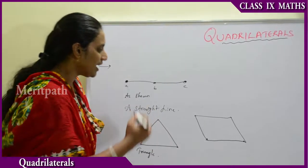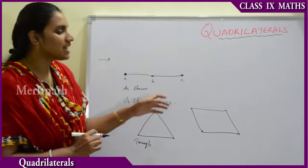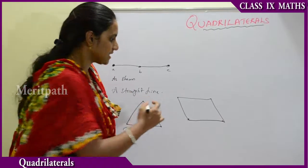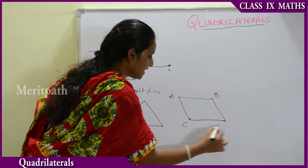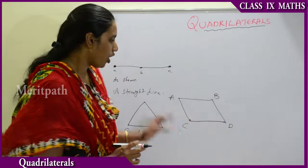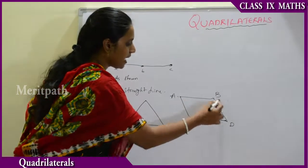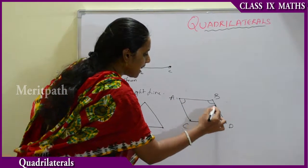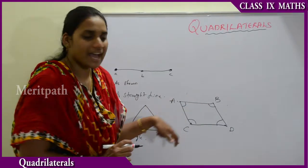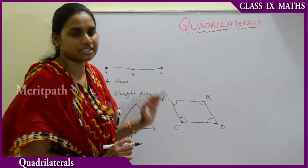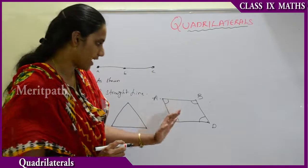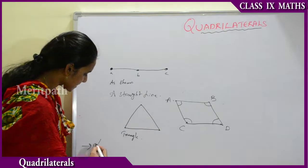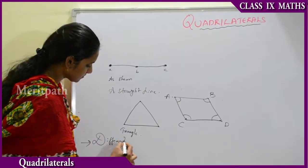When we take four points — that is, four non-collinear points — and we join these four points on a plane, we get a closed figure of four sides. This is none other than a quadrilateral. A figure which has four sides and four vertices is known as a quadrilateral. Now let us see the properties and parts of this quadrilateral.